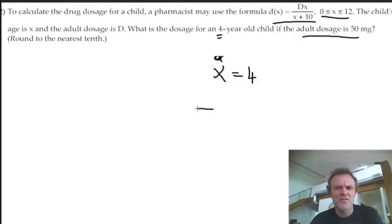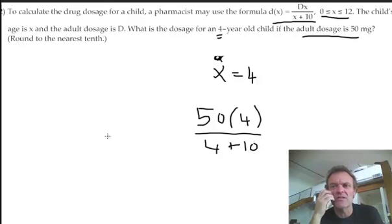50, that's what D equals, times by 4, that's what x equals, all over x plus 10, 4 plus 10. And that's it, really. It looks more complicated than it actually is. The adult dosage, D, is 50. That's there. The child is actually 4.